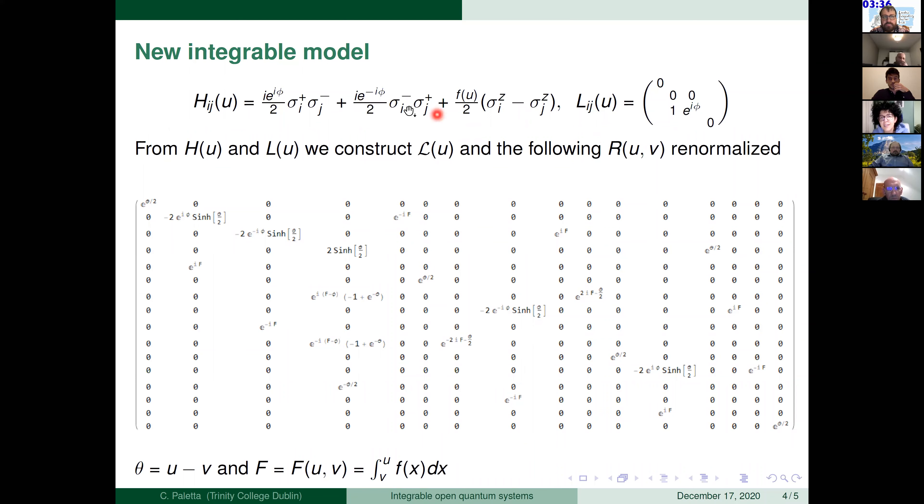Here, this φ is just a real constant and F is an arbitrary function. From these two, we can construct the form of the super operator. I didn't put it here, but if someone is interested, I can show. And from this L, we found the following R matrix. Here, we decided to put the renormalized version just for simplicity. So having found this R matrix, we are sure that our model is really integrable. And here, this θ is just the difference between the spectral parameter and the capital F is the integral of the little f that appears here. We can also notice that if f was not there, then the R was of difference form. So it was only depending on the difference between the U and V.